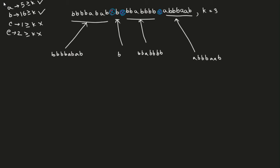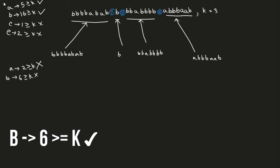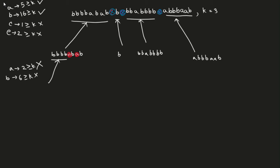Now for the first part — it has two A's, which is not greater than or equal to k, and six B's, which is greater than or equal to k. So we mark and cross out the A's. This gives us: four B's, then just B, then just B again.